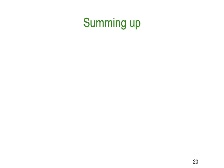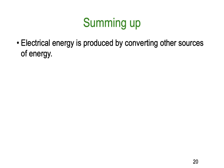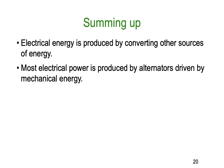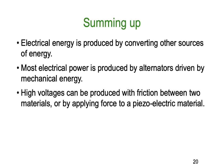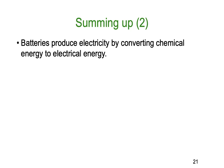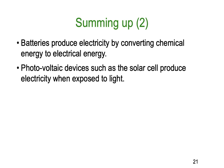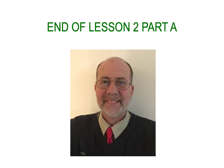Summing up lesson two, part A: electrical energy is produced by converting other sources of energy. Most electrical power is produced by alternators driven by mechanical energy of some kind. High voltages can be produced with friction between two materials or by applying force to piezoelectric materials. Batteries produce electricity by converting chemical energy into electrical energy. And photovoltaic devices such as solar cells produce electricity when exposed to light. That brings us to the end of lesson two, part A — I hope you've enjoyed learning about the different ways we produce electrical energy.